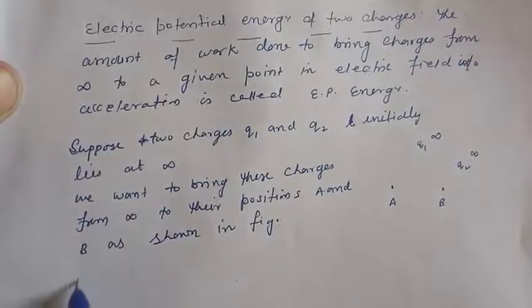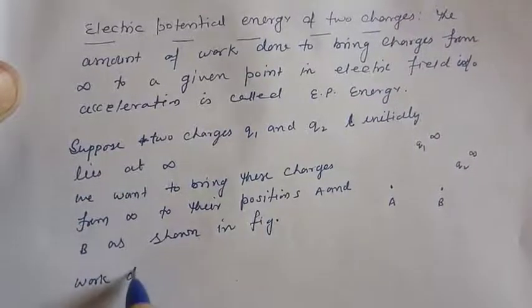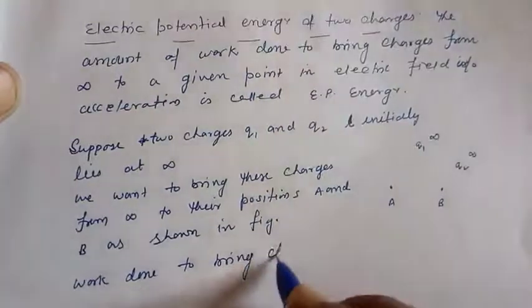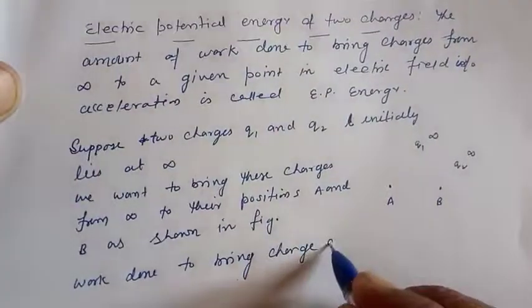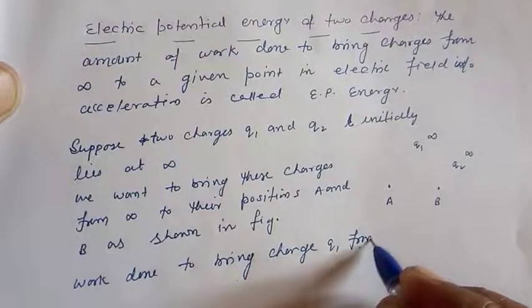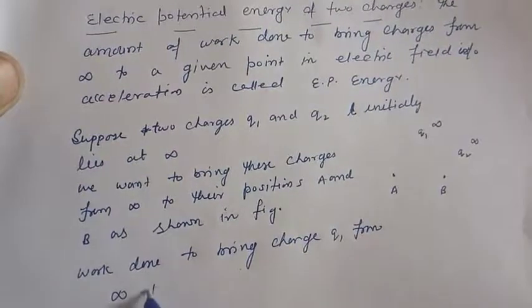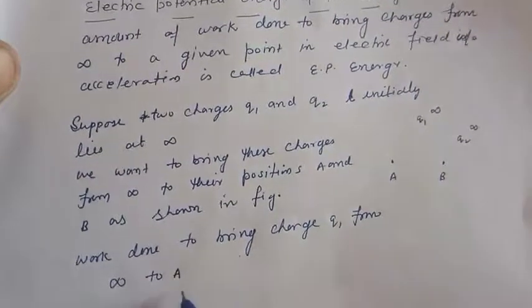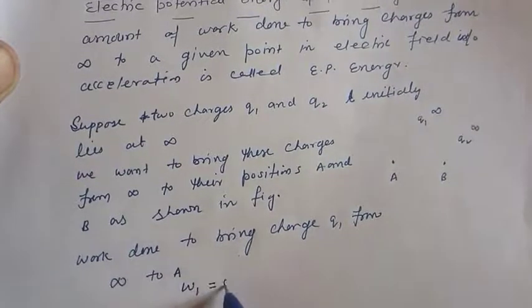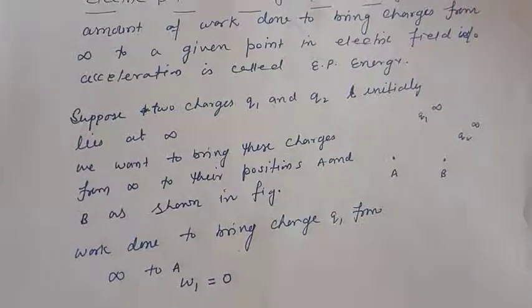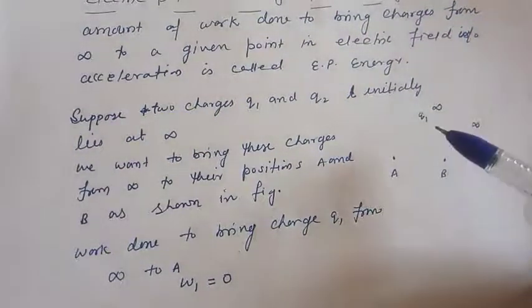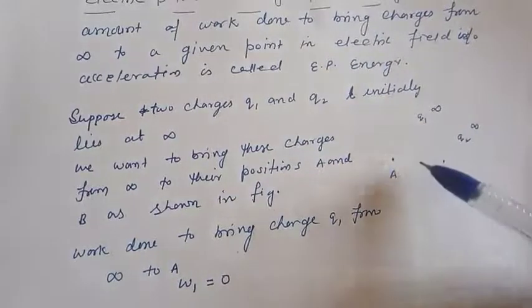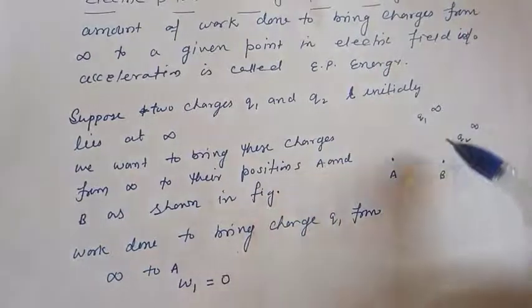first of all work done to bring charge q1 from infinity to point a. Let it be w1 and it is equal to 0. Why it is 0? We are bringing charge q1 from infinity to point a. There is no charge near it.